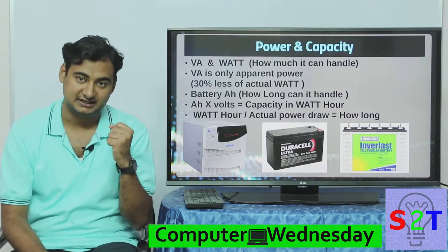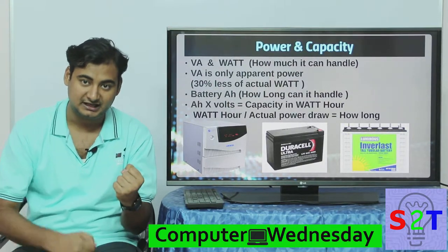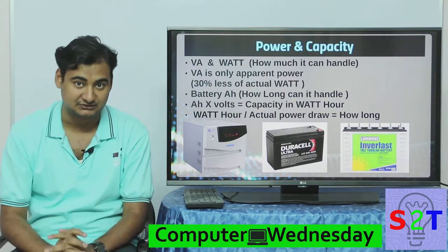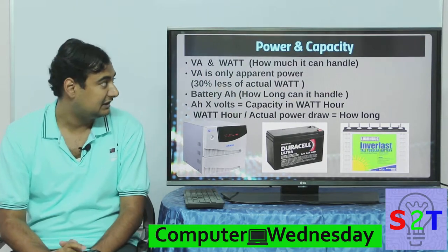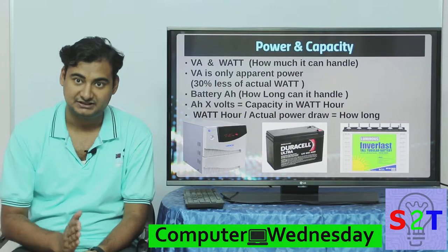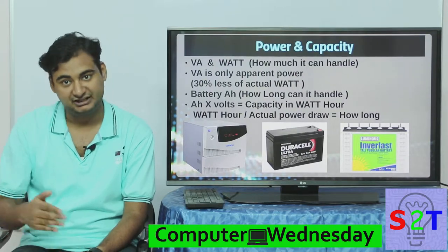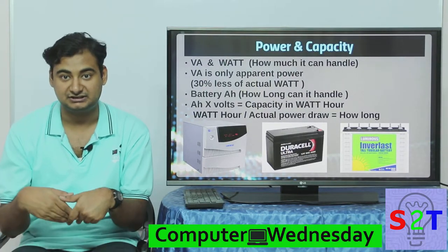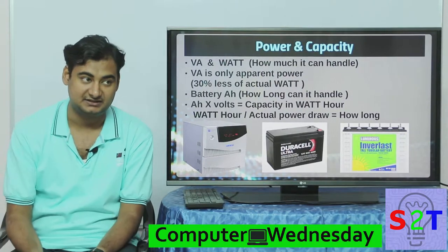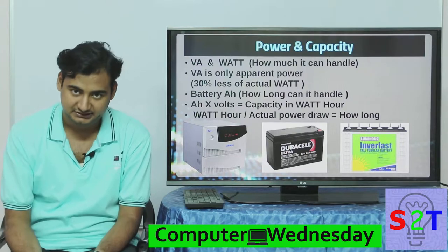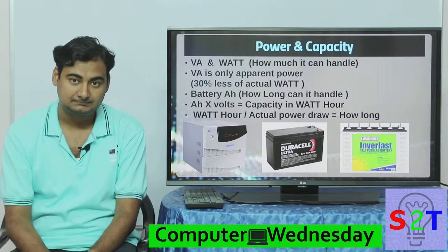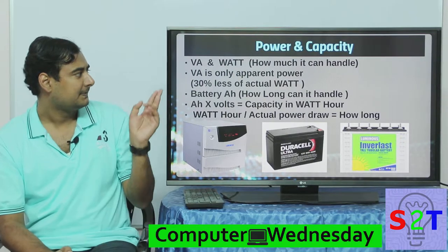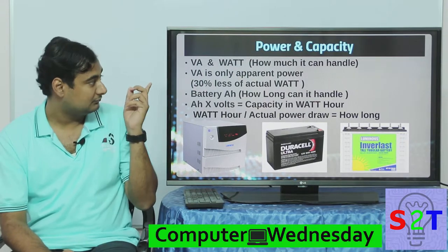UPS units are generally divided into two categories for understanding: power and capacity. These two do not intermingle. You can have a UPS with very low power but very high capacity, or vice versa, or something with both very high capacity and very high power.